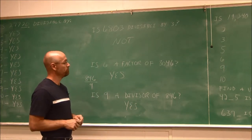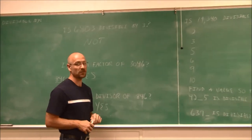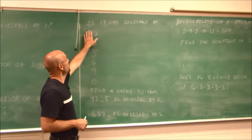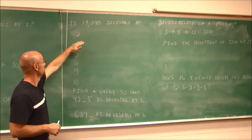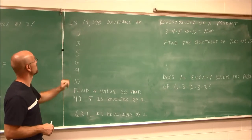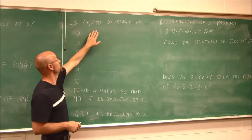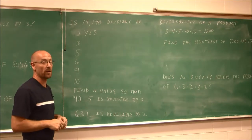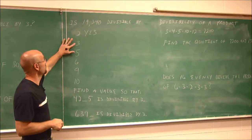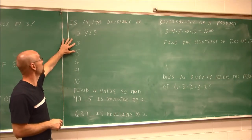All right. Let's take a look at the next one. Is 19,340 divisible by this following list of numbers? Is it divisible by 2? Well, I see it's even, so yes, it is divisible by 2. Does its digit sum to 3?